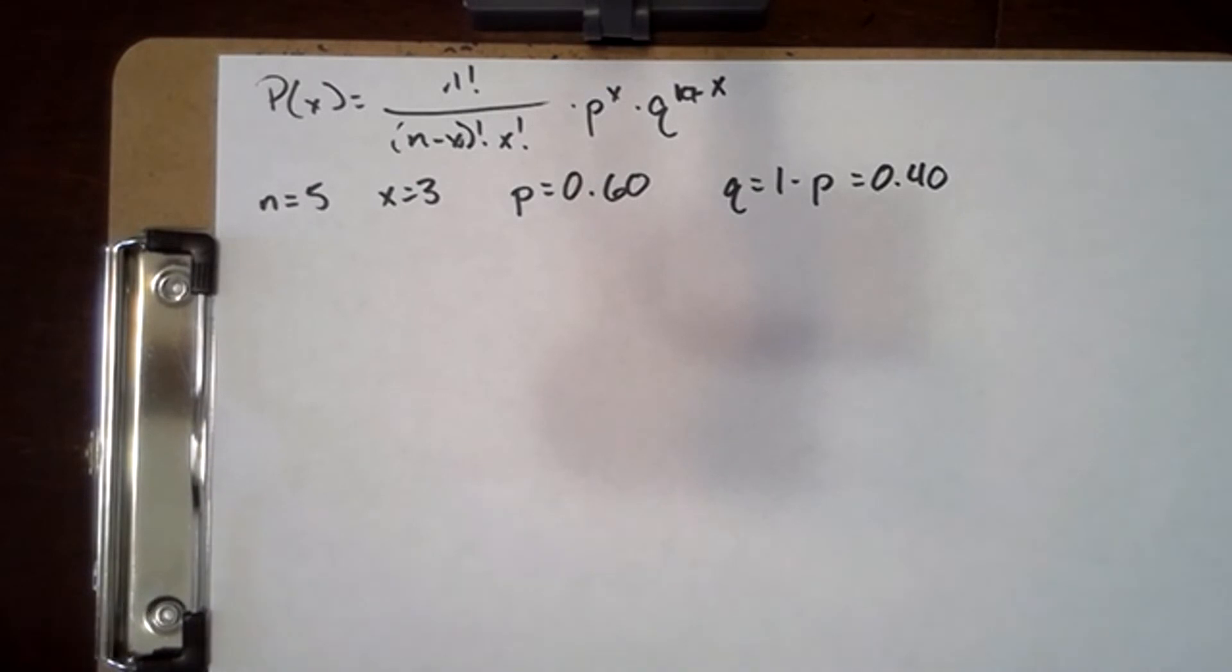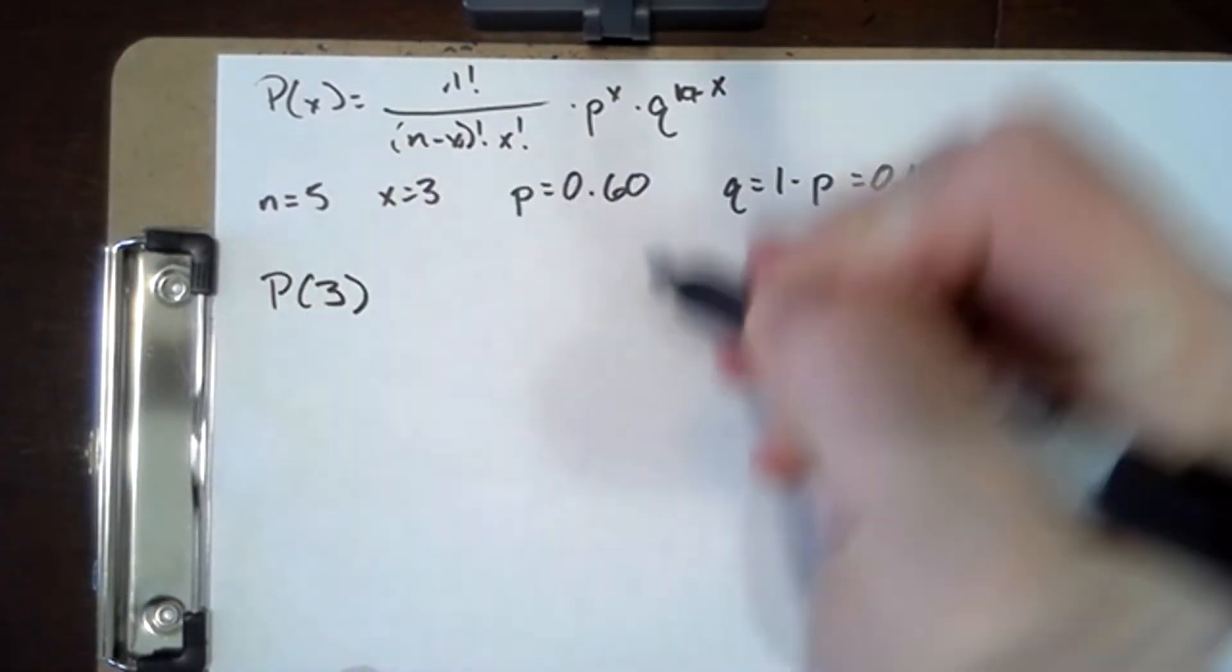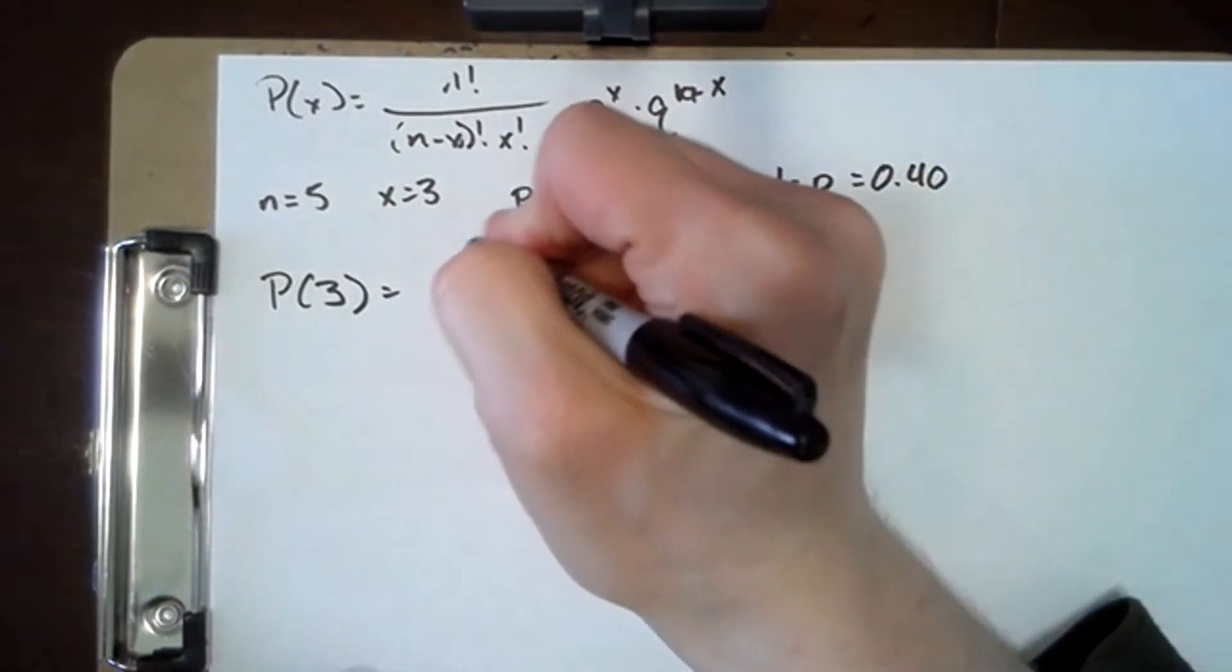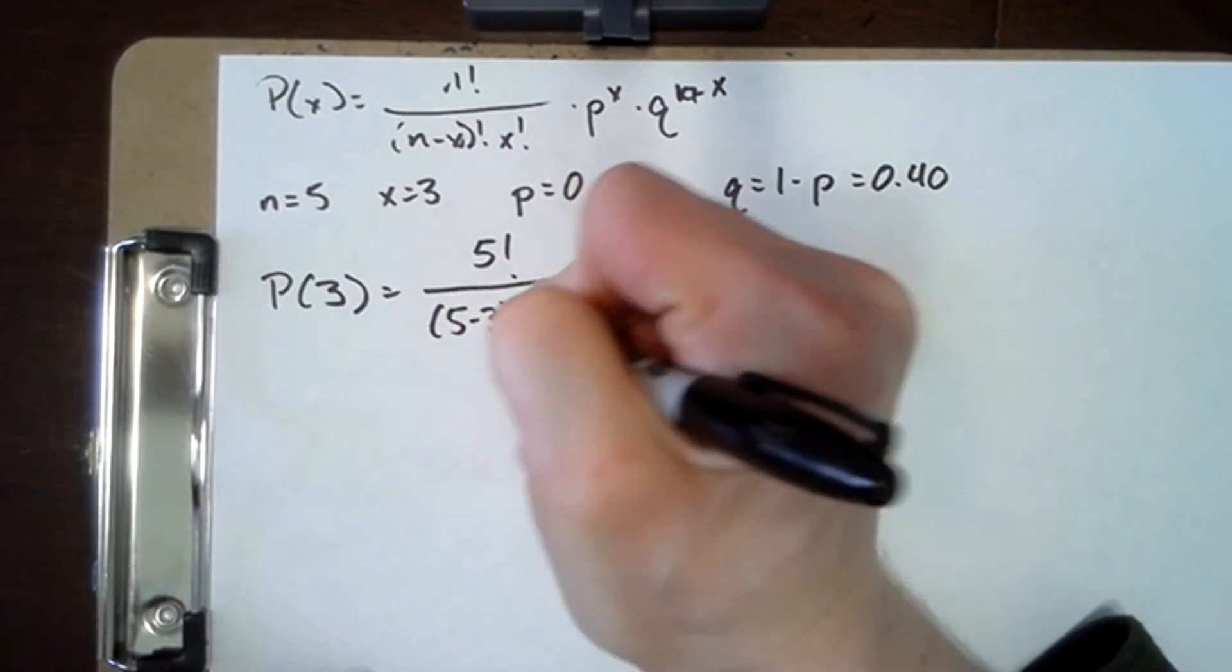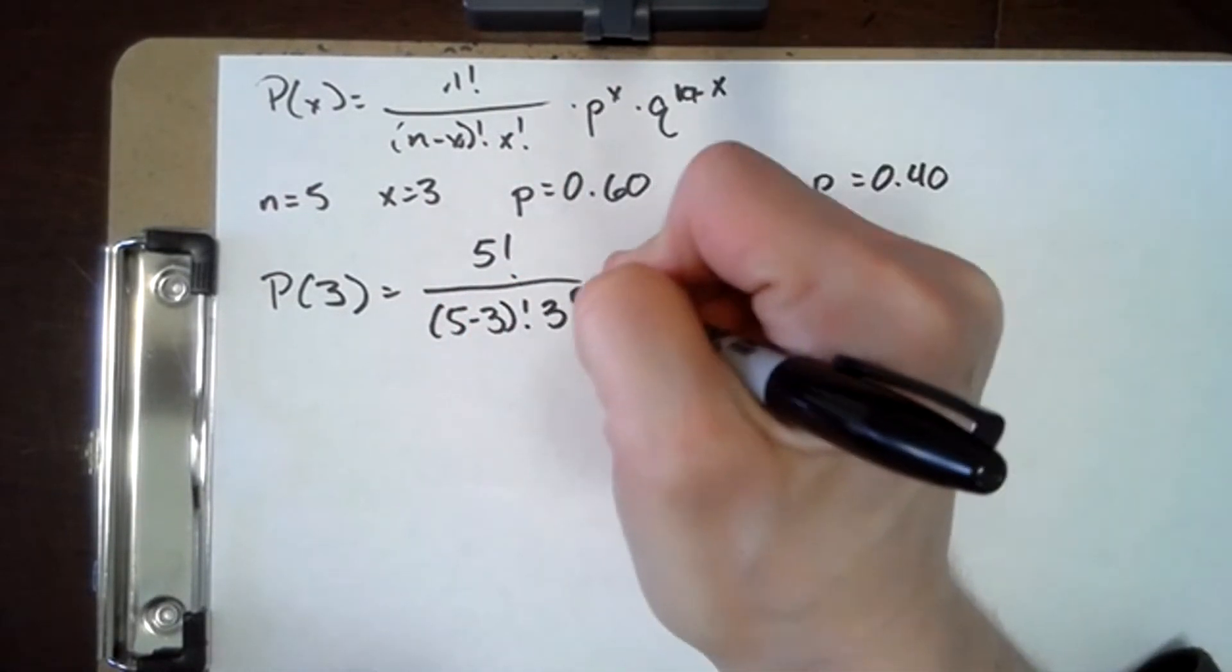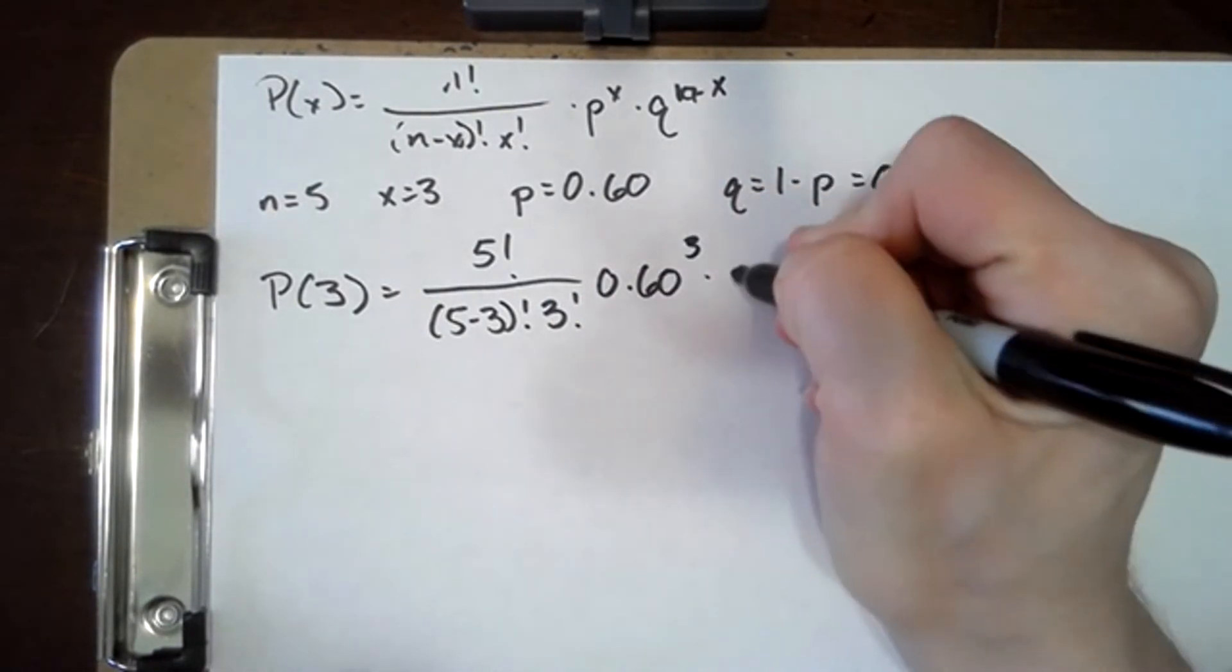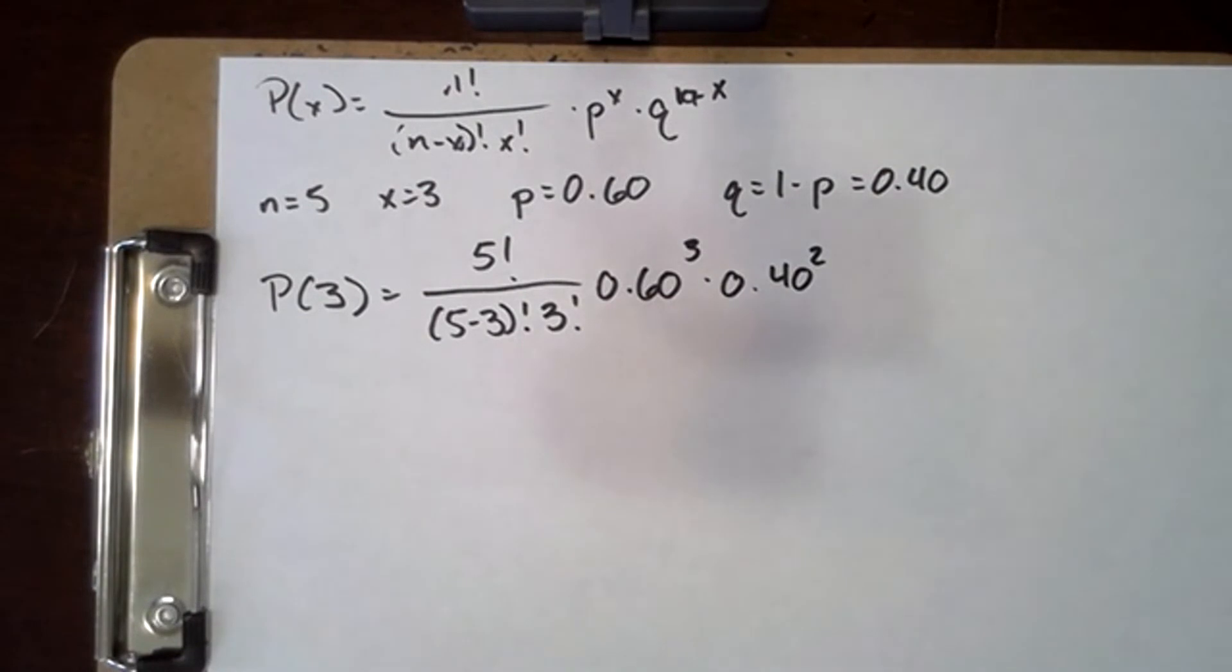P is 0.60 and q, which is 1 minus p is 0.40. So P of 3 is going to be 5 factorial over 5 minus 3 factorial times 3 factorial times 0.60 cubed times 0.40 squared and again we'll go over to Desmos.